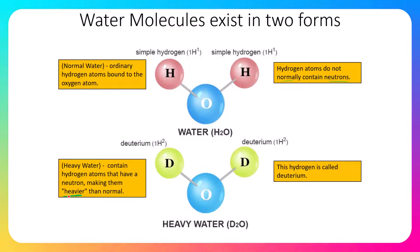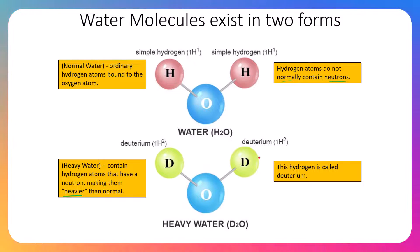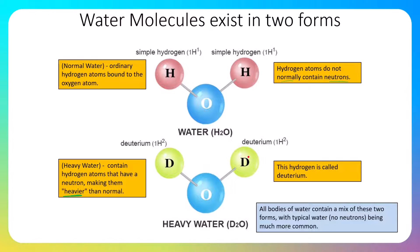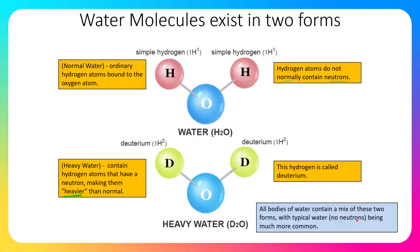Heavy water contains hydrogen atoms that have a neutron, making them heavier than normal — they have an increased atomic mass. This hydrogen is called deuterium; it is still hydrogen, but with an atomic mass of two instead of one, because it has one proton and one neutron, leading to double the mass. All bodies of water contain a mix of these two forms, and we can use the ratio of these two types of water to gather data on where the water may have come from and how bodies of water may be related.